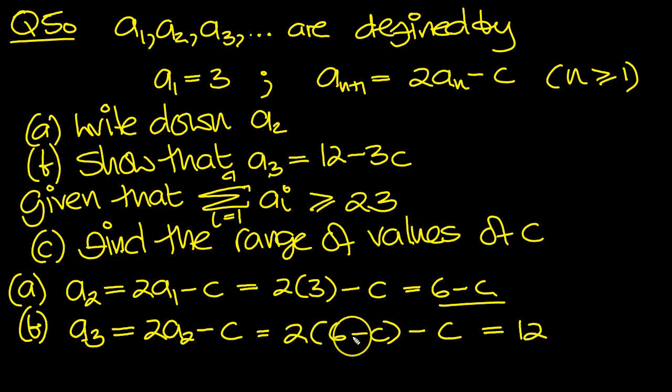put a bracket when more than one term, expand the bracket, 2 times 6 is 12, minus 2c minus another c, which is 12 minus 3c, which is what we needed to show. So that's b done.